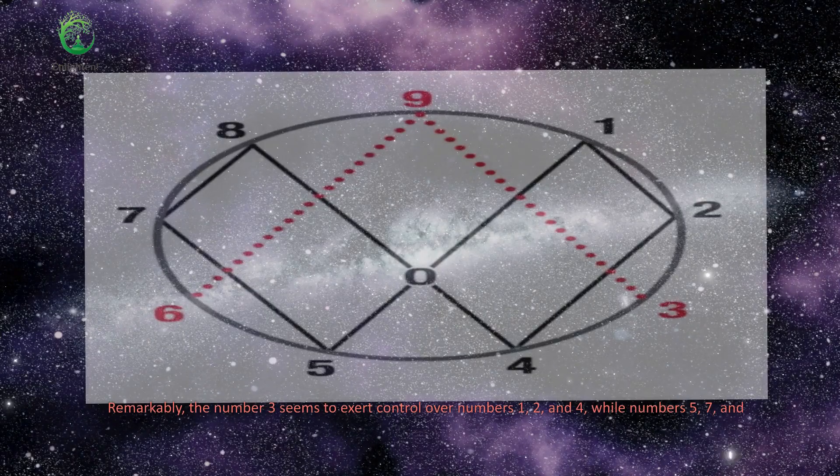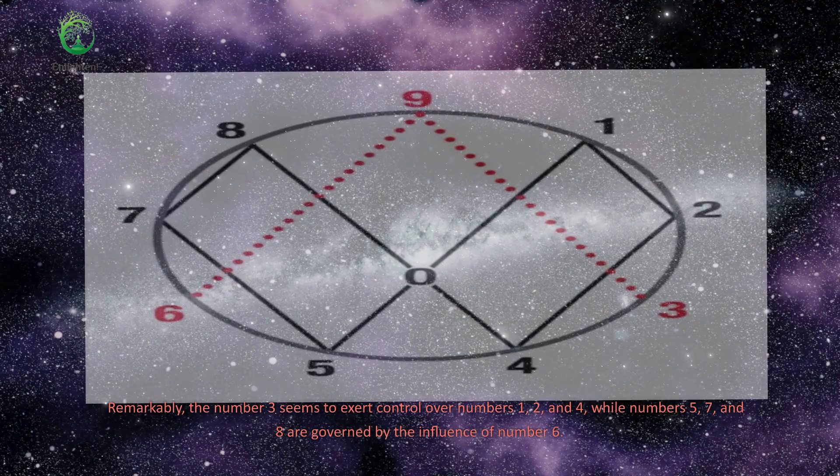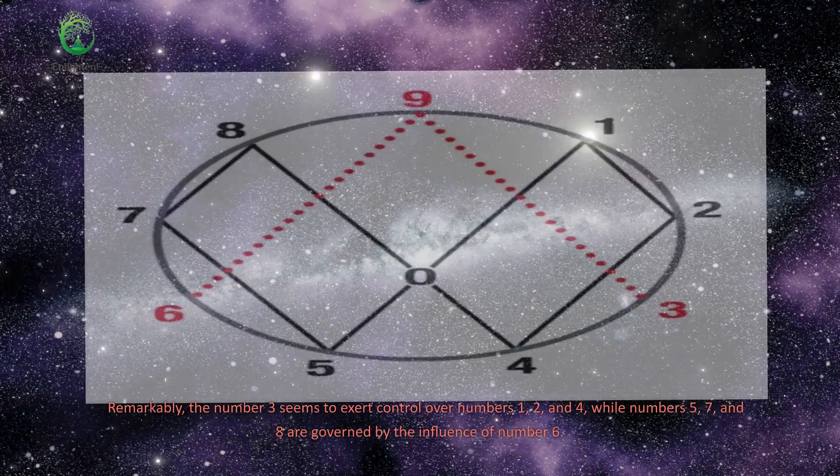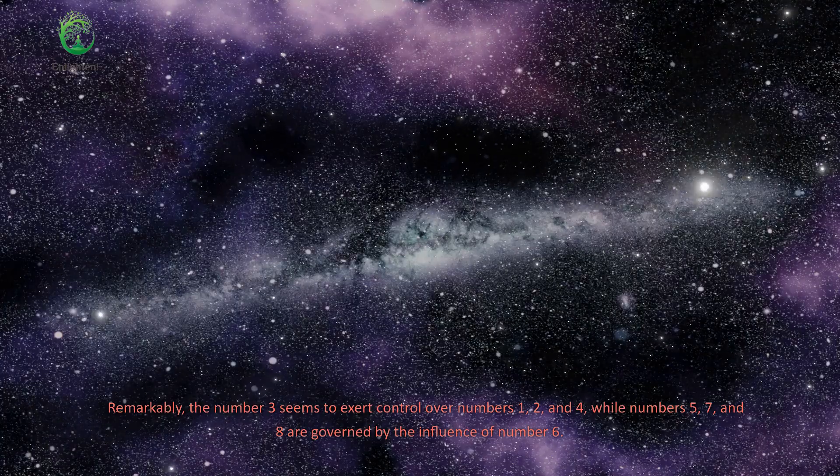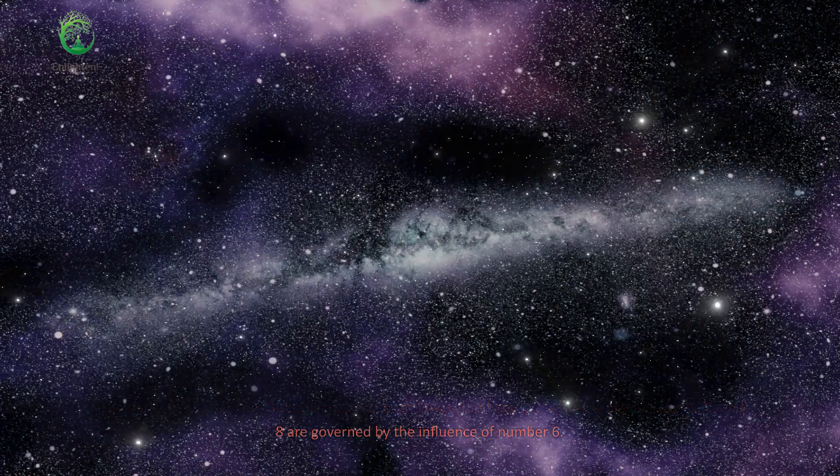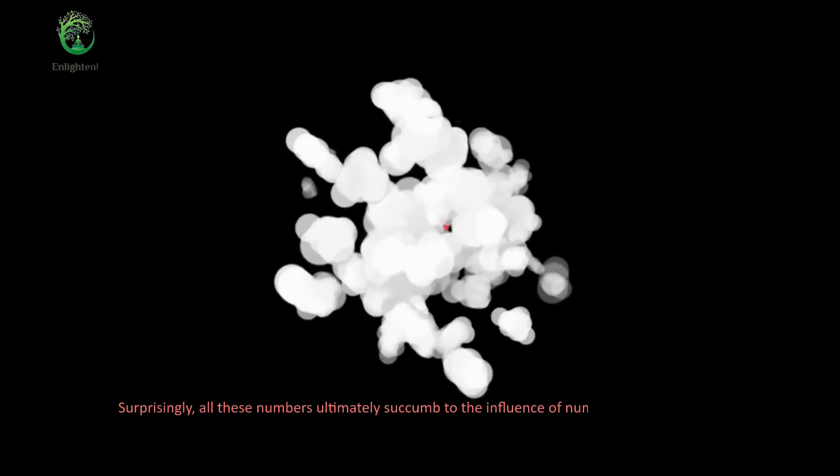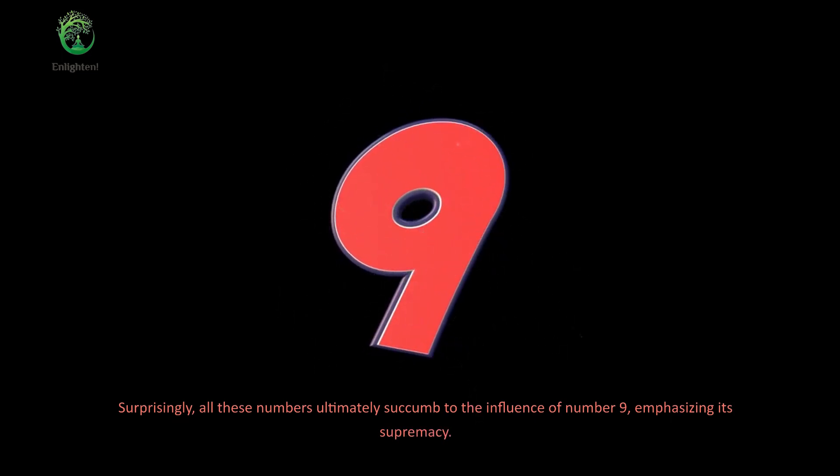Remarkably, the number 3 seems to exert control over numbers 1, 2, and 4, while numbers 5, 7, and 8 are governed by the influence of number 6. Surprisingly, all these numbers ultimately succumb to the influence of number 9, emphasizing its supremacy.